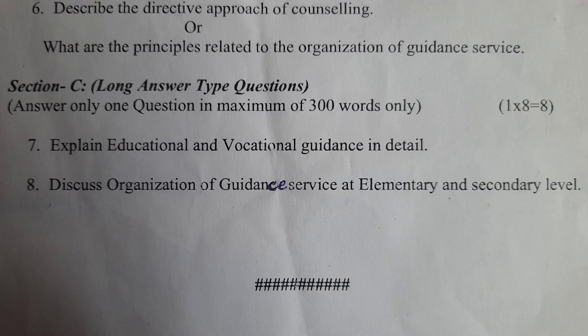Section C: Long Answer Type of Questions. Answer only one question in a maximum of 300 words only. 1 x 8 is equal to 8 marks. Question 7: Explain educational and vocational guidance in detail. Question 8: Discuss organization of guidance service at elementary and secondary level.